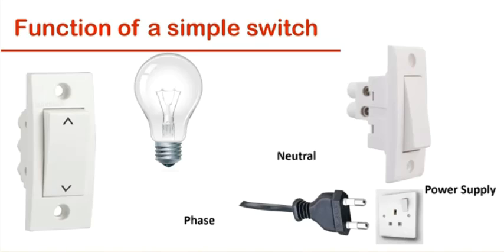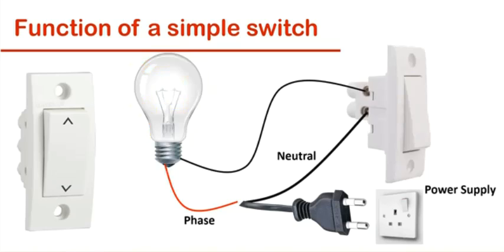To control an electrical appliance using a switch, we connect one electrical wire directly to the appliance and the other wire to the appliance through the switch. When the switch is pushed downward, the appliance turns on and the device stops as soon as the switch is pushed upward.